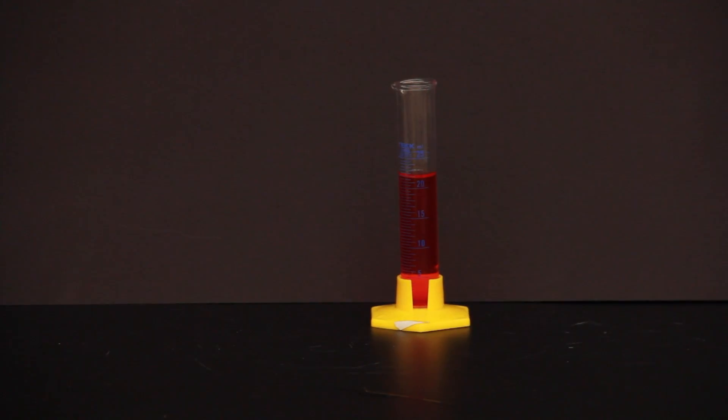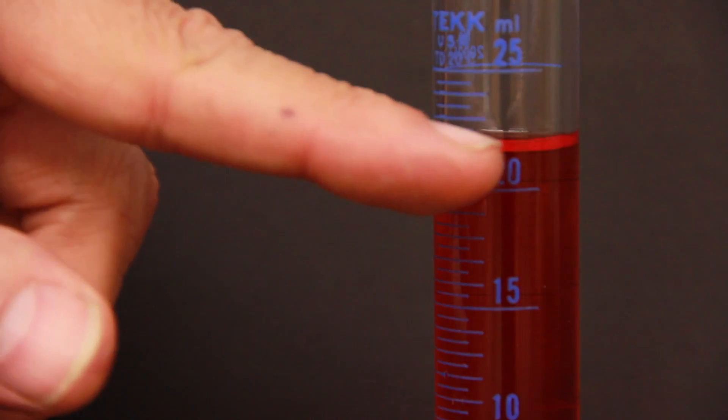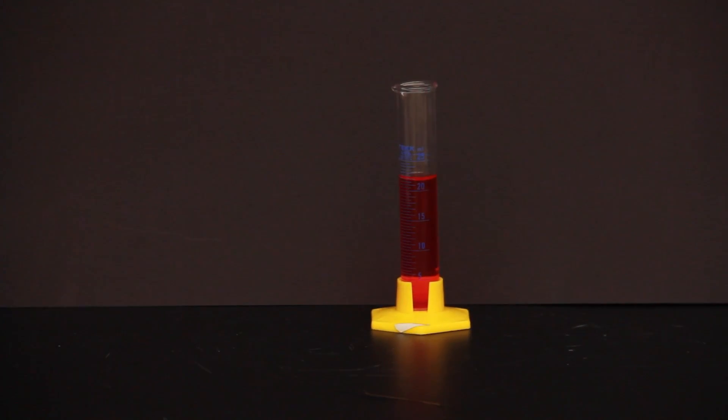It is also important when using a graduated cylinder to properly read the volume of the liquid inside the cylinder. When a liquid is in a cylinder, it has a tendency to creep up along the sides. This forms a curved layer called a meniscus. To accurately read the volume of a graduated cylinder, you always read the bottom of the meniscus.